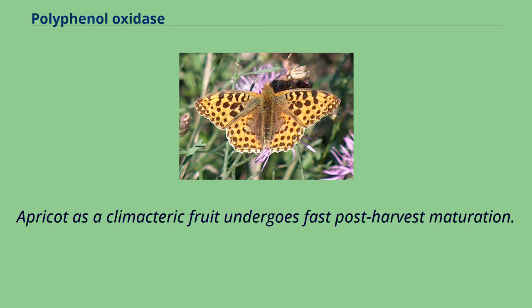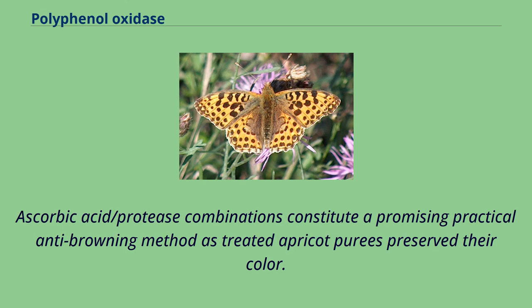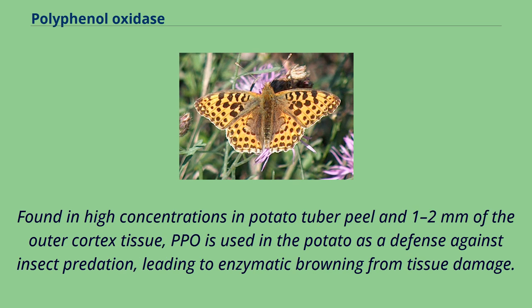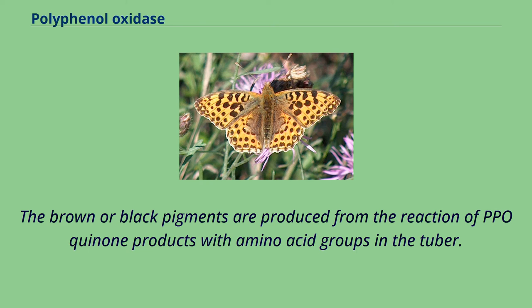Apricot is a climacteric fruit that undergoes fast post-harvest maturation. The latent PPO form can spontaneously activate during the first weeks of storage, generating the active enzyme with a molecular weight of 38 kDa. Ascorbic acid/protease combinations constitute a promising practical anti-browning method as treated apricot purees preserve their color. Found in high concentrations in potato tuber peel and 1-2 mm of the outer cortex tissue, PPO is used in the potato as a defense against insect predation, leading to enzymatic browning from tissue damage. Damage in the skin tissue of potato tuber causes a disruption of cell compartmentation, resulting in browning. The brown or black pigments are produced from the reaction of PPO quinone products with amino acid groups in the tuber.